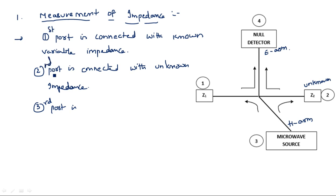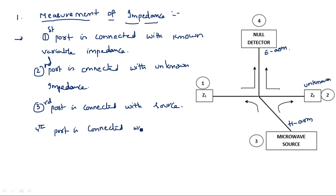So the second port is connected with the unknown impedance, the third port is connected with the excitation or source, and the fourth port is connected with the null detector. Using the properties of magic T, the power coming from port 3 entering into the junction will be equally divided into port 1 as well as port 2. That is one of the properties of this magic T.